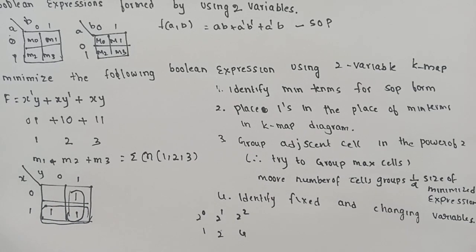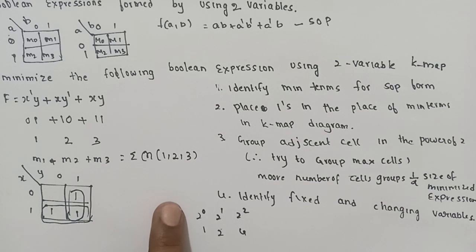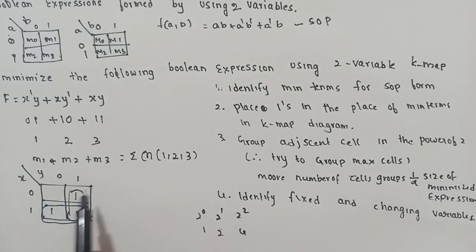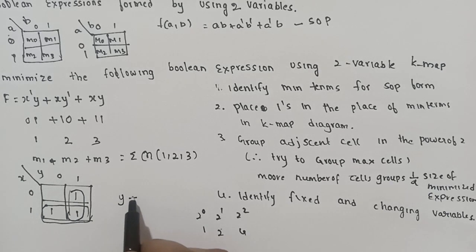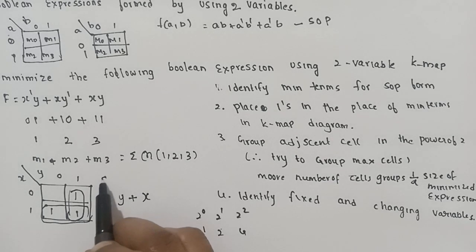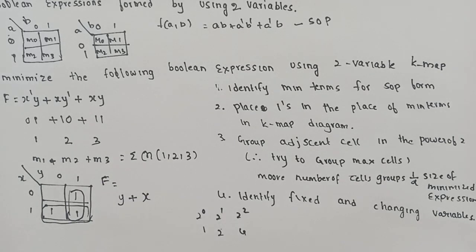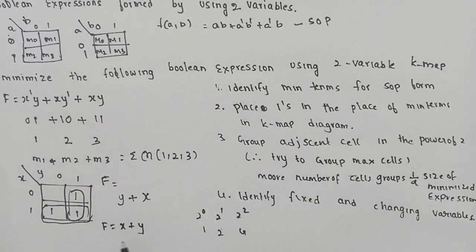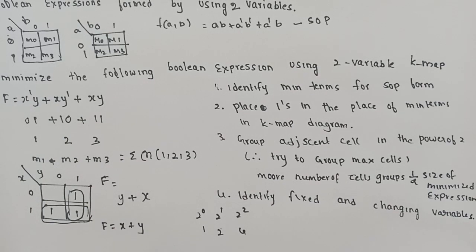After grouping, Y is equal to X fixed, Y is equal to 0 and 1, X plus Y. So after minimization we have: F equals X plus Y. We have minimized the Boolean expression X'Y + XY' + XY to X plus Y using the K-map.